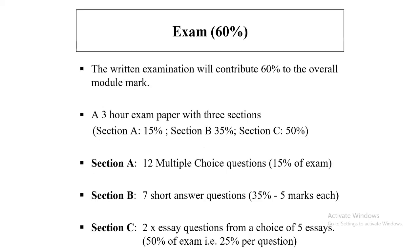The exam is worth 60%, and as I said before, this is the aspect of the module that students tend to fall down on. You must be mindful that you have to pass both the coursework element and the exam element — if you fail the exam element, you have to resit it. The exam structure has three sections: A, B, and C. Section A is worth 15%, Section B is worth 35%, and Section C is worth 50%.